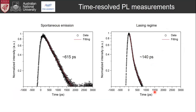Time-resolved photoluminescence measurements show a clear difference between spontaneous emission and laser regimes: the decay time goes from 615 picoseconds in the spontaneous emission regime to 140 picoseconds in the lasing regime. This fast decay time could potentially be used for ultra-fast modulation.